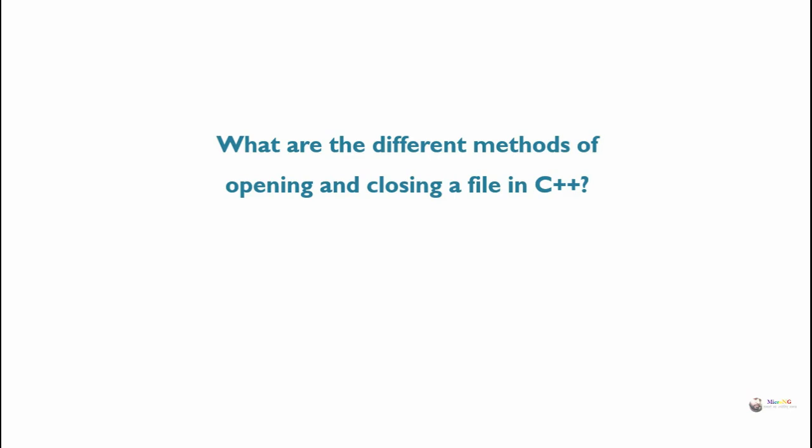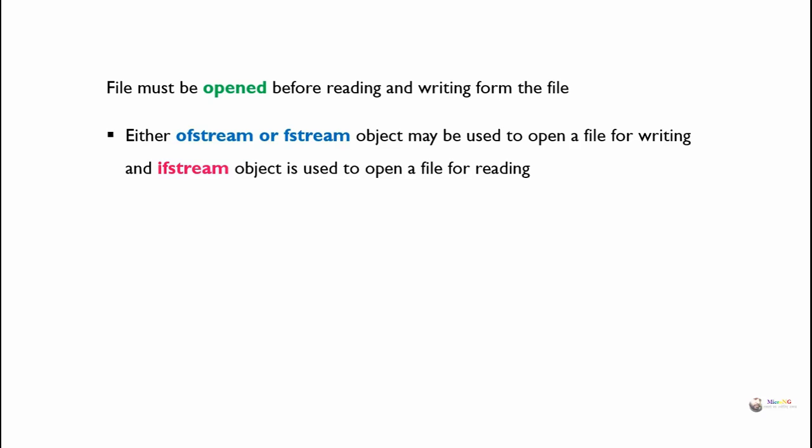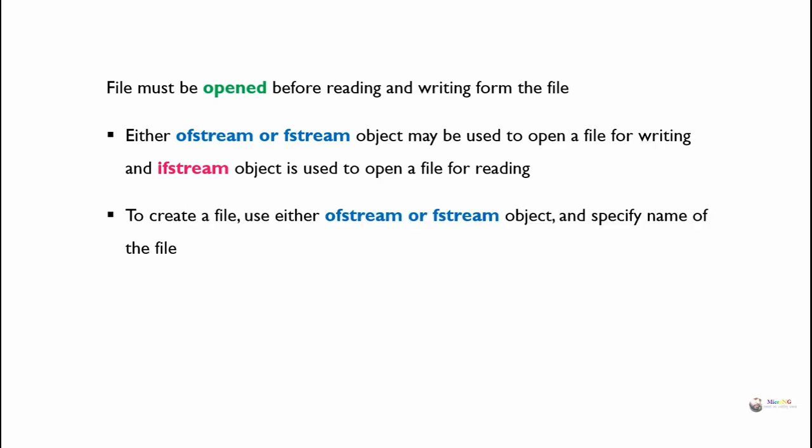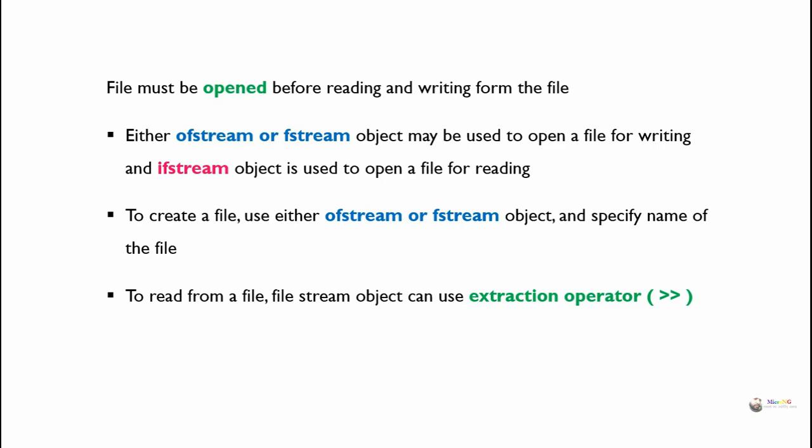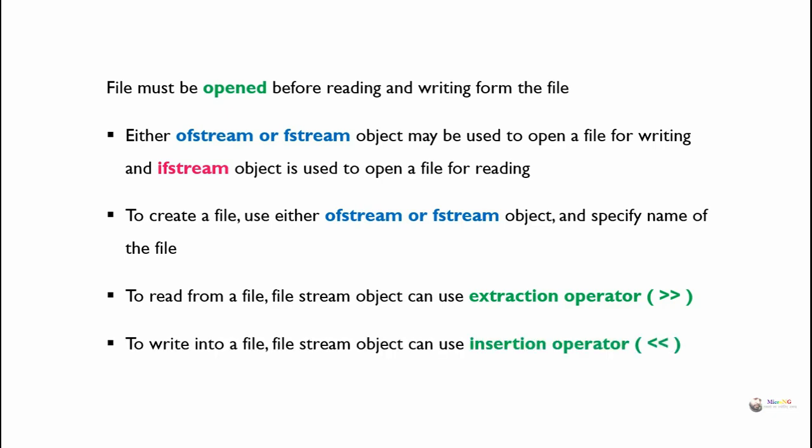What are the different methods of opening and closing a file in C++? A file must be opened before reading and writing. Either ofstream or fstream object may be used to open a file for writing, and ifstream object is used to open a file for reading. To create a file, use either ofstream or fstream and specify the name of the file. To read from a file, the file stream object can use the extraction operator. To write into a file, the file stream object can use the insertion operator.